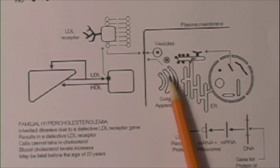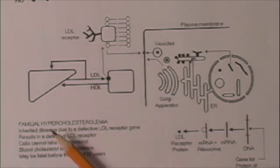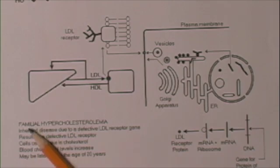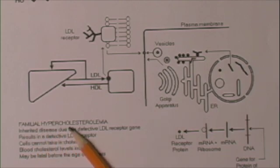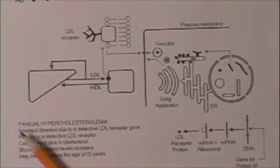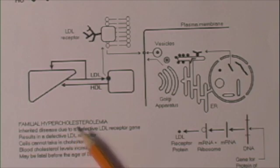A good example of the role of cholesterol in transport is a condition called familial hypercholesterolemia. Familial means it runs in the family. Hyper means greater than. Cholesterol refers to cholesterol. And emia comes from heme, meaning blood. So it's an inherited condition in which high cholesterol is found in the blood.